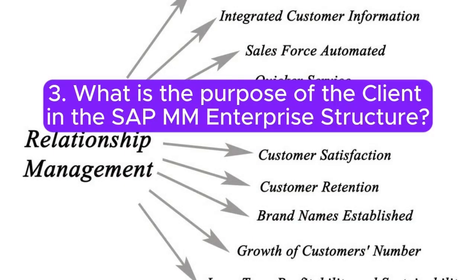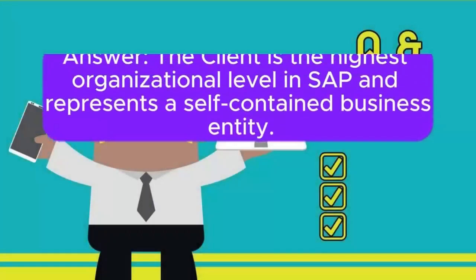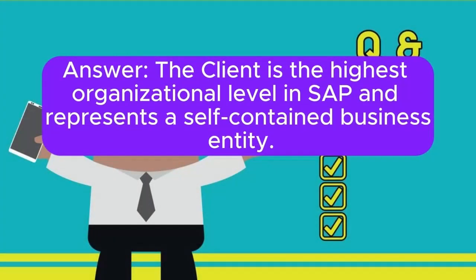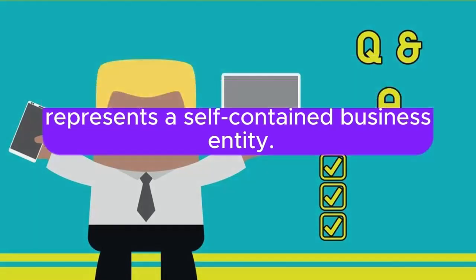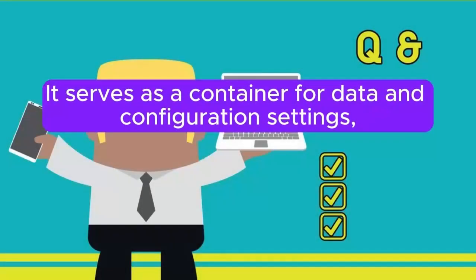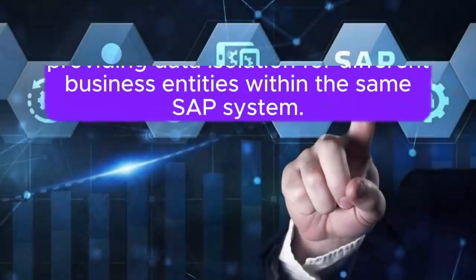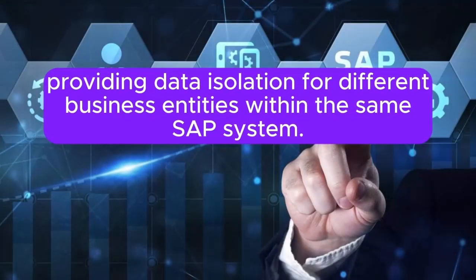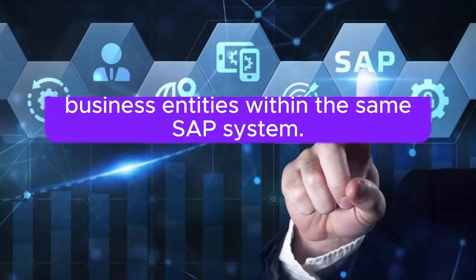Question 3: What is the purpose of the client in the SAP MM Enterprise Structure? The client is the highest organizational level in SAP and represents a self-contained business entity. It serves as a container for data and configuration settings, providing data isolation for different business entities within the same SAP system.